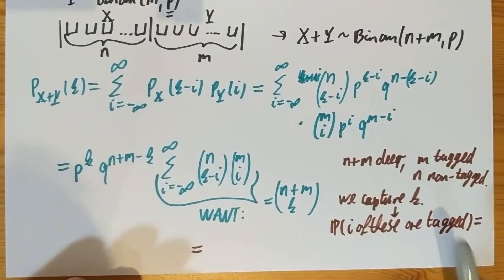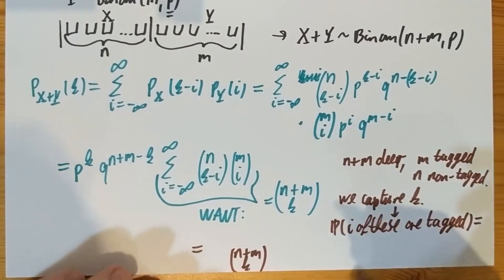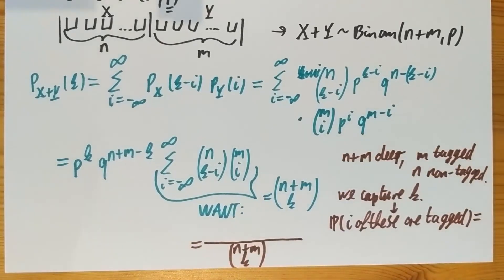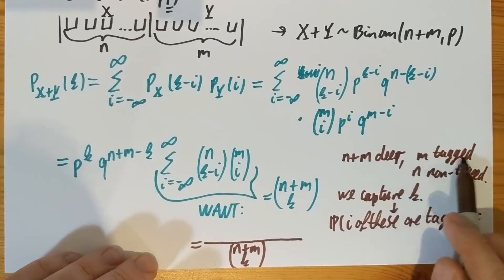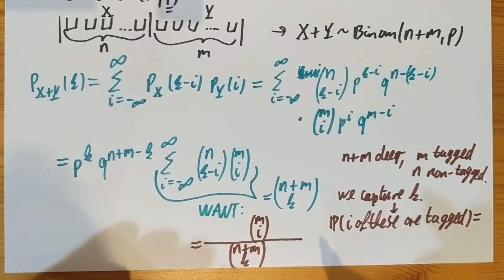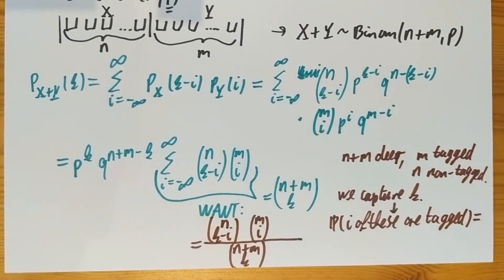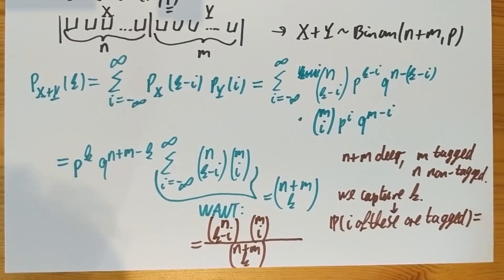This is a story we had with the hypergeometric random variable, and the answer was the following: we want to capture K out of N plus M deer. This can be done in N plus M choose K many ways. Of those Ks we captured, we want I to be tagged. So we want I of those Ks to come from the M deer which are tagged. And we want the remaining K minus I to come from those deer which are not tagged. So that's N choose K minus I. This is the probability that exactly I of the K captured deer are tagged. We pick I out of the tagged M ones, we pick the remaining K minus I out of the N non-tagged ones, and in total we pick K out of N plus M.